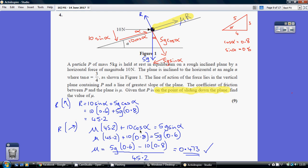Okay, and that equals my only force going down the plane, which is 5G sin alpha, or 5G times 0.6.